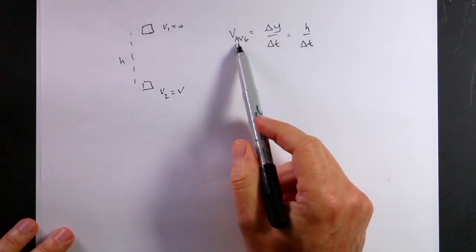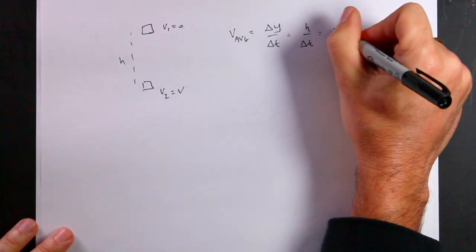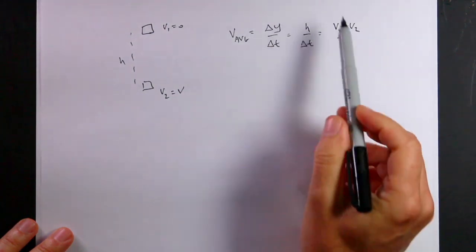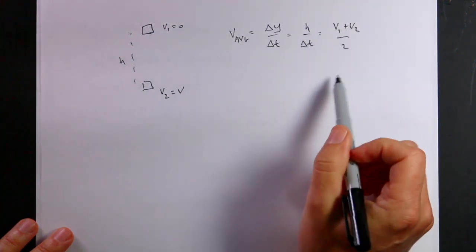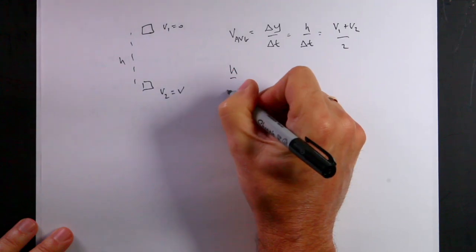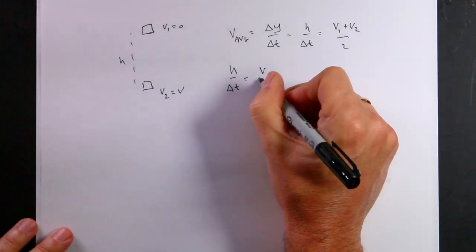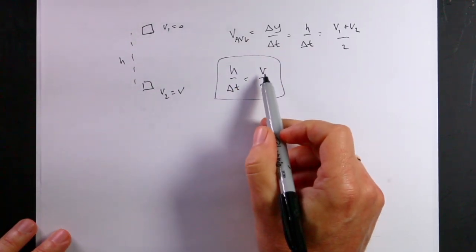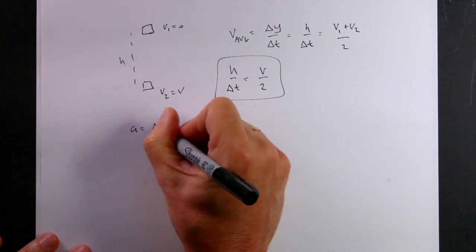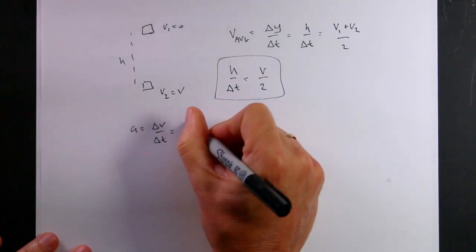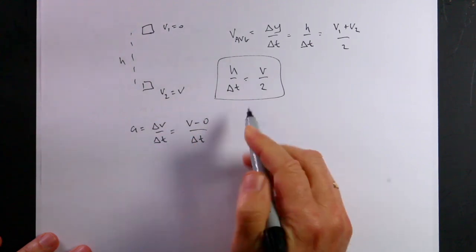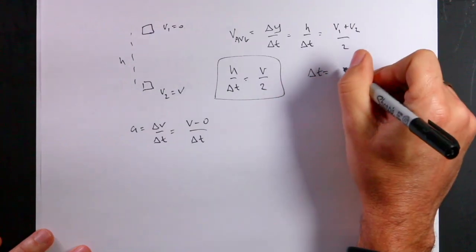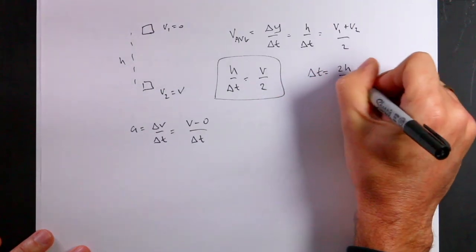But the average velocity is equal to V1 plus V2 over 2. It's the average. And so V1 is zero, V2 is just V. So I get H over delta T equals V, I'll just call it V over two. So I can't find the acceleration, but now I can use the definition of acceleration. A is delta V over delta T. So that's going to be V minus zero over delta T. And I'm going to solve this for delta T. So delta T is equal to 2H over V.